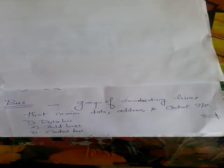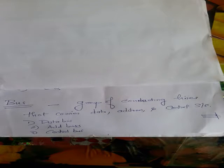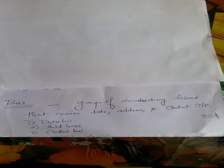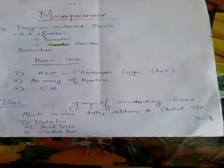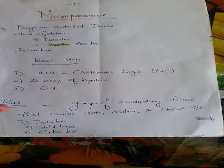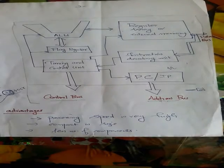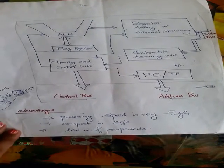The conducting lines carrying data are known as the data bus. The conducting lines carrying all the addresses are known as the address bus. And the conducting lines carrying all the control signals are known as the control bus.